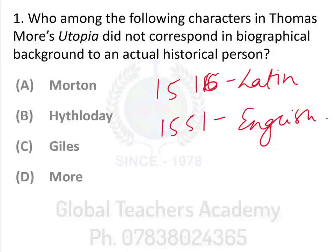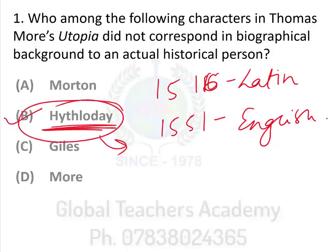The first option is Morton, who was the actual chancellor to Henry VIII, so he is an actual historical person. Option B, Hythloday, is not an actual historic figure. In the text he's a philosopher and a world traveler who lives on the island of Utopia for five years. The name itself is a Greek word meaning 'a talker of nonsense.' So your answer here is B.